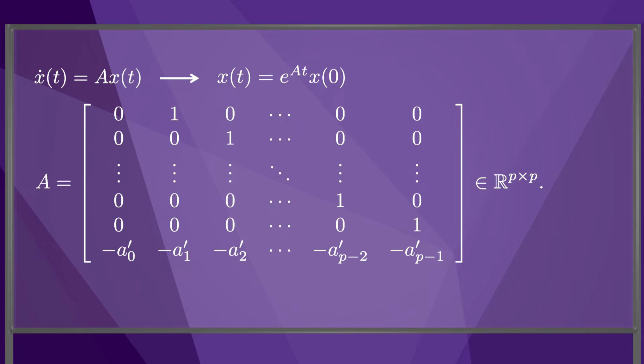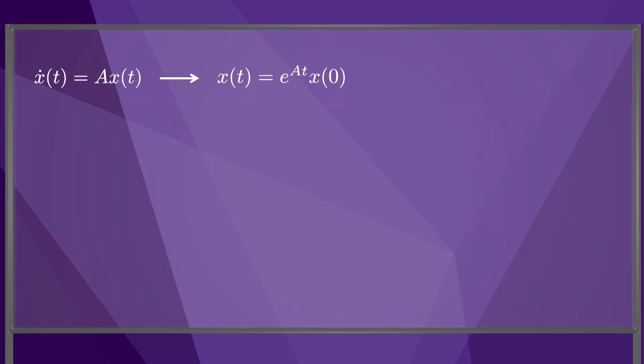These eigenvalues determine whether an initial error, x at time zero, grows or shrinks with time. If x and A are both scalars, then the error shrinks as a decaying exponential if A is negative, and it grows exponentially if A is positive.